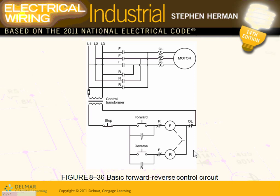Forward-reverse: this is another step — you can have forward-reverse with two sets of contacts driven by two magnetic starters. If I want to forward this motor, I close the forward contacts, which also opens the reverse circuit so I can't go reverse at the same time. When you close forward, the motor runs forward and the reverse is interlocked open. They call this mechanical interlocking and electrical interlocking.